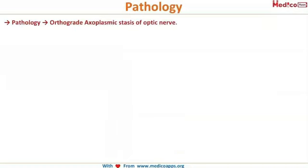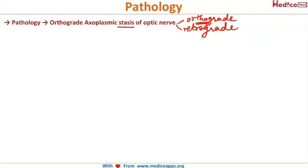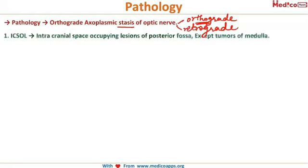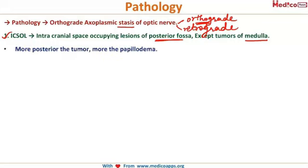The pathology behind papilledema is stasis of the axoplasmic flow in the optic nerve. There are two types: orthograde and retrograde. Stasis in the orthograde axoplasmic flow results in papilledema. The first and most common cause is intracranial space-occupying lesions, mostly in the posterior fossa — except tumors in the medulla. Importantly, the more posterior the tumor, the greater the papilledema.